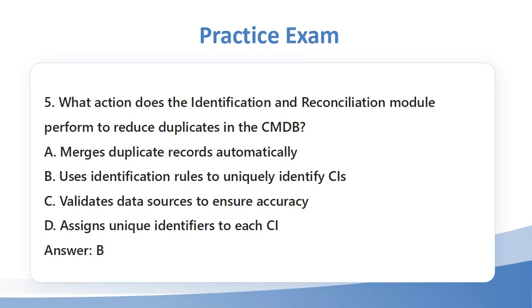Question 5: What action does the identification and reconciliation module perform to reduce duplicates in the CMDB? a. Merges duplicate records automatically. b. Uses identification rules to uniquely identify CIs. c. Validates data sources to ensure accuracy. d. Assigns unique identifiers to each CI. Answer: B.